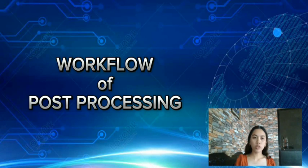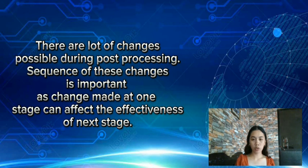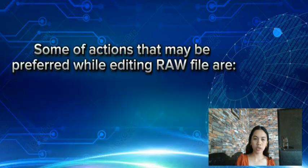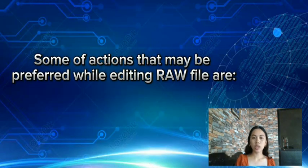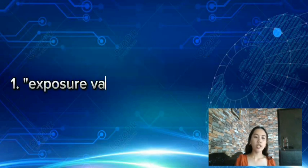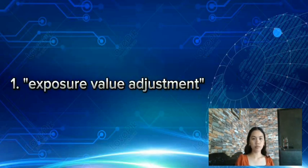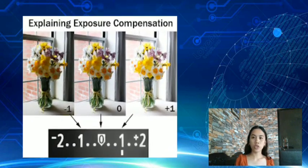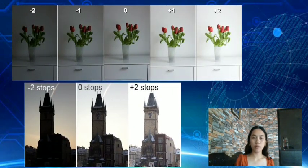Let's move on to the workflow of post-processing. The sequence of these changes is important, as a change made at one stage can affect the effectiveness of the next stages. Here are actions that may be performed while editing a raw file. Number one: exposure value adjustment. Adjusting the exposure value can help you achieve different creative effects. For example, if you want to capture motion blur, you can lower the EV by using a smaller aperture, a slower shutter speed, or a lower ISO.